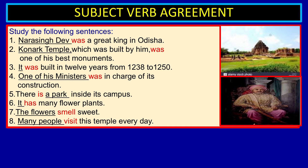There is a park inside its campus. Here 'there' is the anticipatory or dummy subject, and 'a park' is the real subject. In English we use 'there is a park,' 'there is a high school in our village,' 'there are two temples in our village.' When the sentence begins with 'there,' the verb agrees with the noun phrase that follows — the real subject.